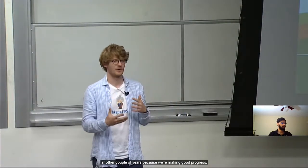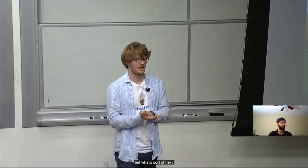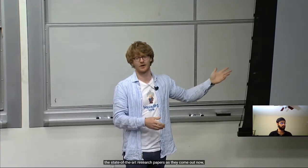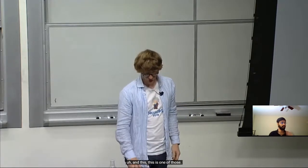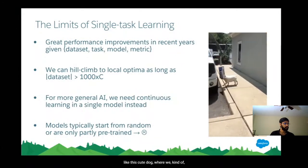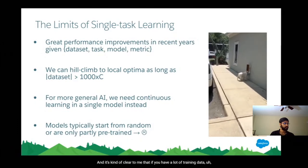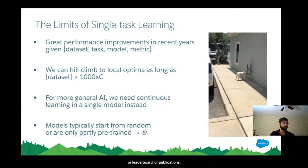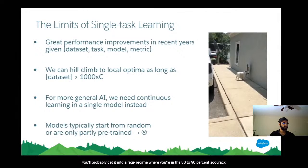The question is: okay, we're going to probably keep doing that for another couple of years because we're making good progress, but what's next on the research side? What I love about this class is that you go from maybe not knowing much about NLP at all to being able to understand state-of-the-art research papers as they come out. So why not continue to work in this multitask regime? In some ways I feel like the community is a little bit like this cute dog where we randomly restart after every project.